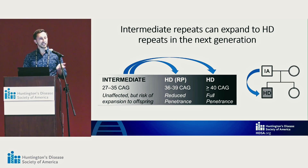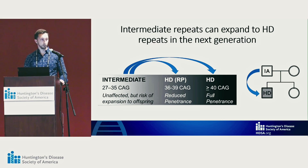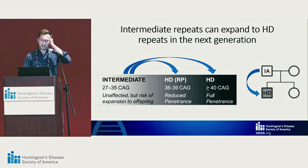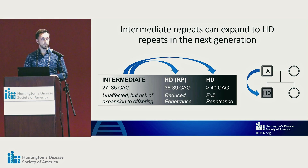Intermediate repeats can expand in the next generation. If someone has an intermediate repeat, particularly if they are a father, it can expand into the HD range in the next generation. This is very, very rare from mothers. Most of the time when we see a new HD case that has emerged this way, it is from a father to a son or a daughter — almost always from a father. Typically if HD is running in the family you can get it from your mother, but if it's totally brand new, it usually comes from a father.